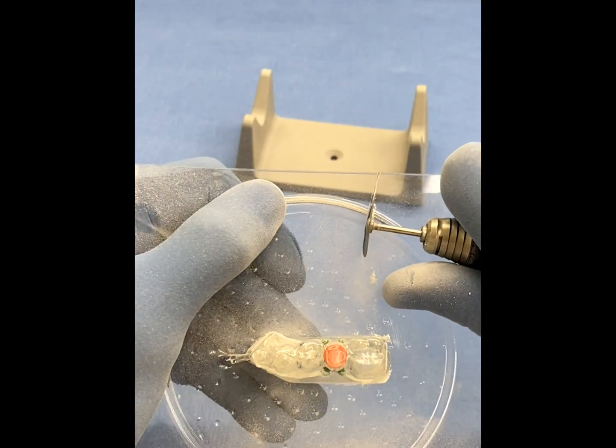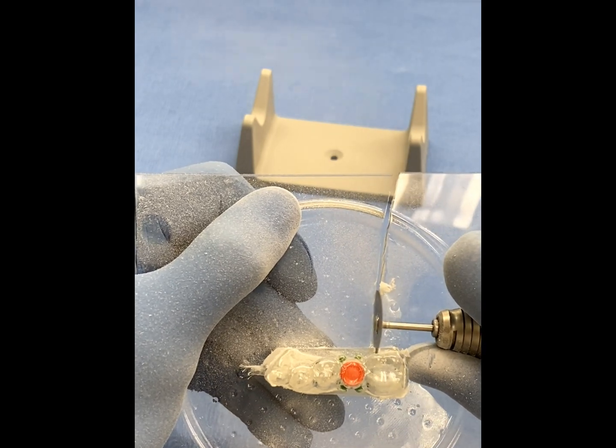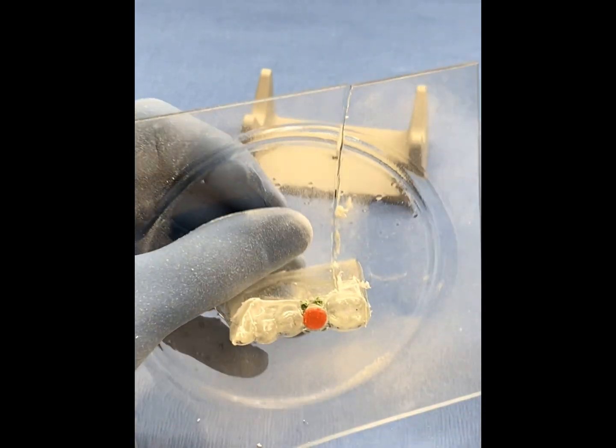Once the outline is created, a separating channel is cut in the remaining plastic and removed, leaving only the rough surgical guide on the model.